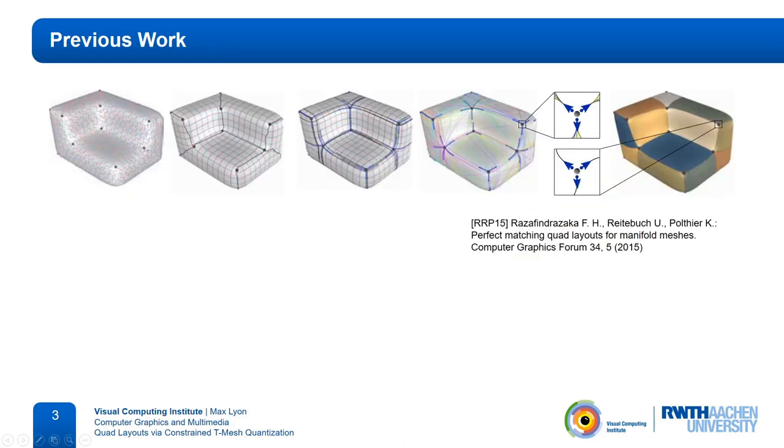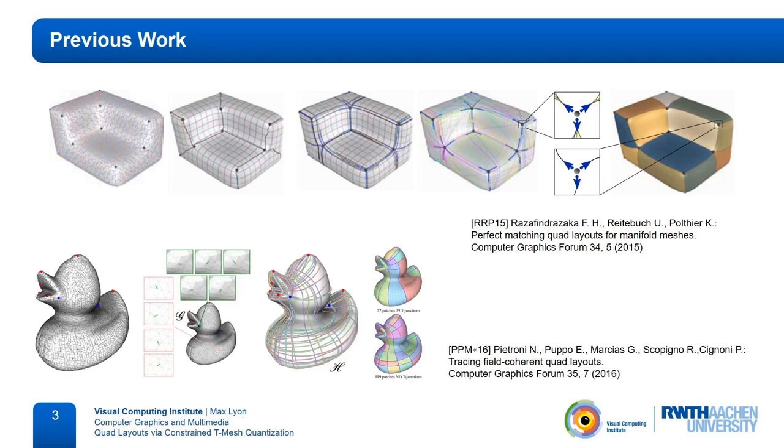Other methods compute a layout from scratch. Two examples are the methods of Razafindrazaka and colleagues and Pietroni and colleagues. Both compute a set of potential separatrices connecting the layout vertices. They then solve a binary program that selects a subset of the candidates using constraints to ensure the layout is valid. The success of these methods depends on the set of candidates. If it is too small, no valid solution may exist.